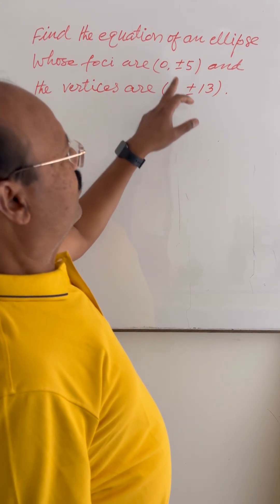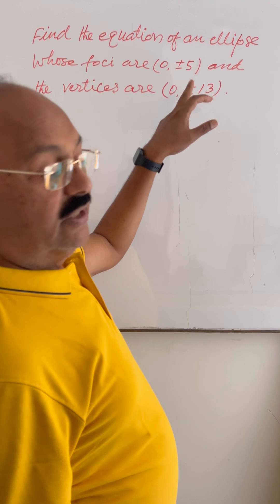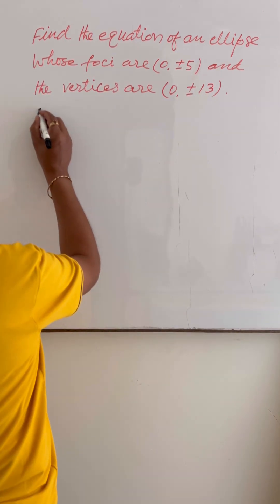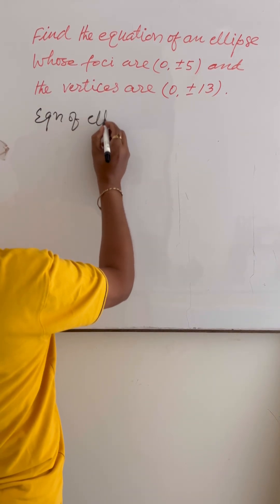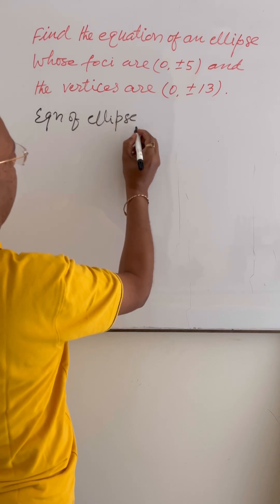This means this ellipse will be a vertical ellipse. So the equation of the ellipse will be